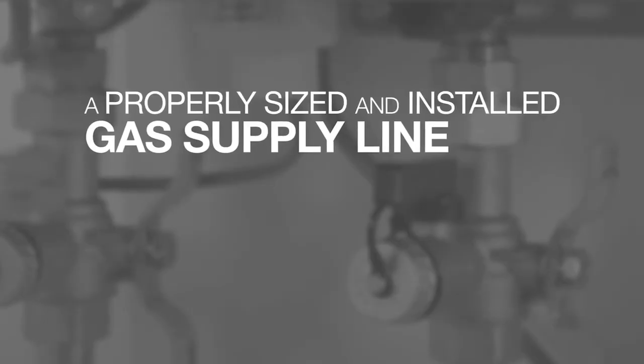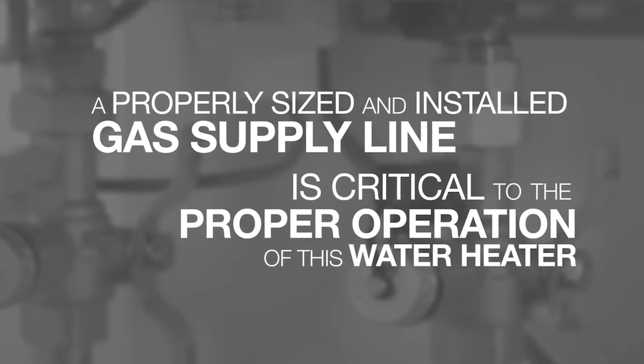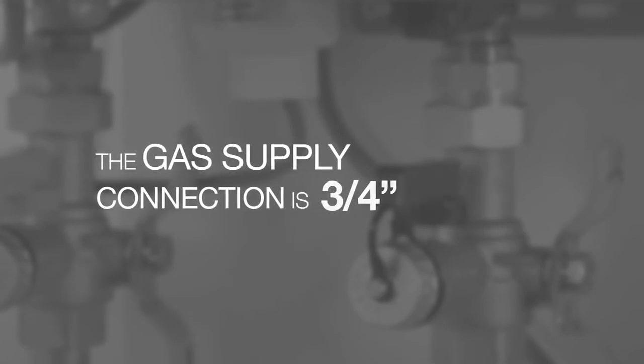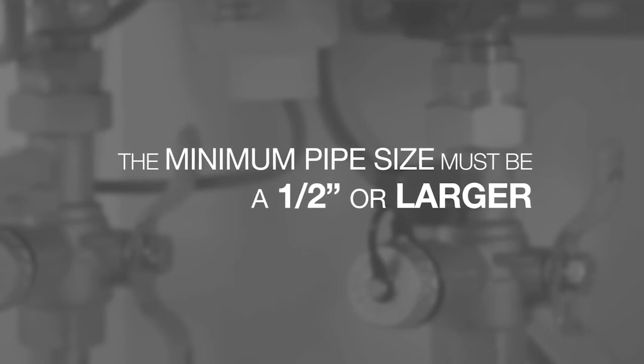Install gas line. A properly sized and installed gas supply line is critical to the proper operation of this water heater. The gas supply connection is three-quarters inch NPT. The minimum pipe size must be half inch or larger.